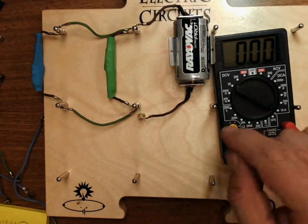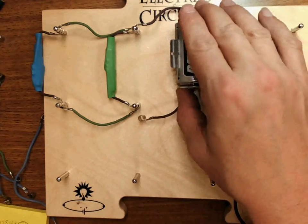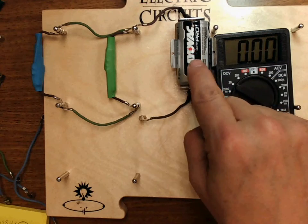We're going to look at measuring voltage and current in a parallel circuit. Here I have a parallel circuit with a single battery. You could have two in your circuit.